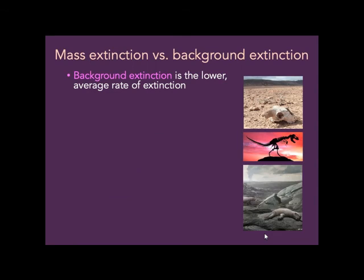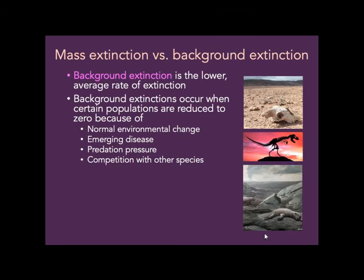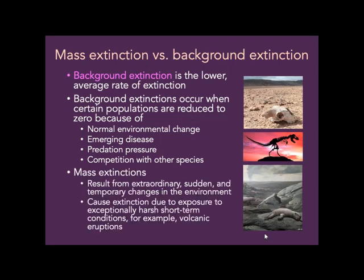We need to distinguish a mass extinction from background extinction. Background extinction is a lower average rate of extinction that happens all the time — due to normal environmental change, new diseases, new predators, or new competitors. A mass extinction, by contrast, is the result of an extraordinary, sudden, and temporary change in the environment — like volcanic eruptions or an asteroid hitting the Earth — causing sudden extinction due to exposure to something very harsh and short-term.